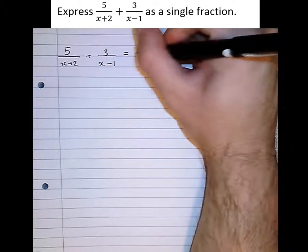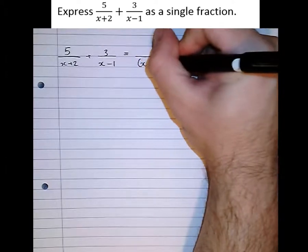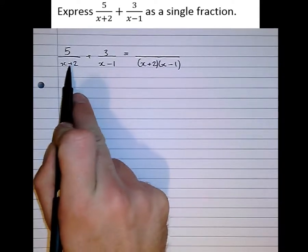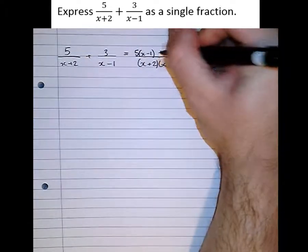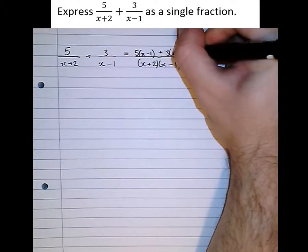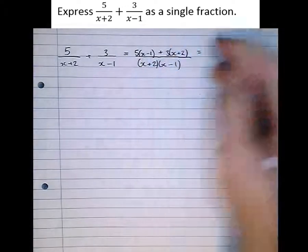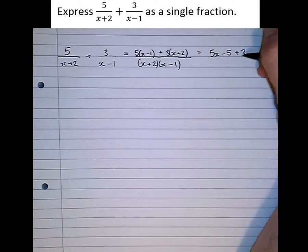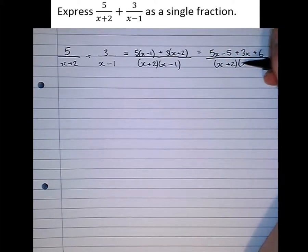First of all we need to decide on a common denominator. We get the common denominator by multiplying the two denominators together: (x + 2)(x − 1). This side will multiply by (x − 1), so we do the same to the top, and there's a plus sign, then 3 times (x + 2).